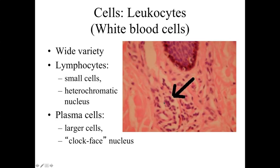There may be some larger lymphocytes in this area — these would be plasma cells, essentially B lymphocytes that have become activated and are producing antibodies. They're going to be larger cells with a clock-face nucleus, but generally very difficult to identify especially in hematoxylin and eosin stained specimens. So if you're looking at a connective tissue region and you see lots of small basophilic round cells packed together, just think of these cells as lymphocytes.